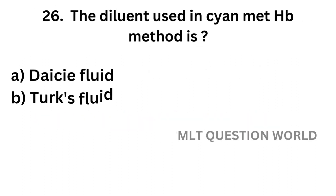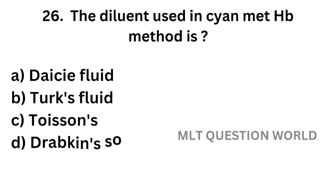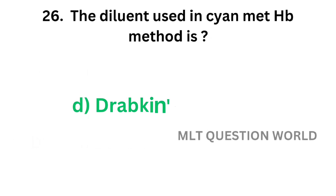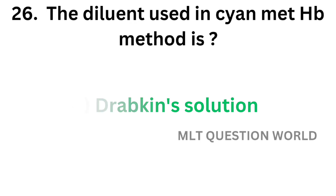Question number 26. The diluent used in cyanmethemoglobin method is: Option A, Dacies fluid; Option B, Turk's fluid; Option C, Toison's fluid; Option D, Drabkin's solution. The correct answer is Option D, Drabkin's solution. The diluting fluid used in cyanmethemoglobin method is Drabkin's solution.